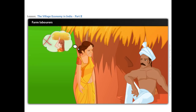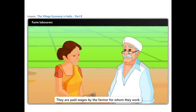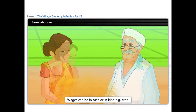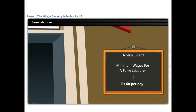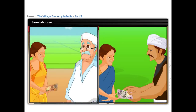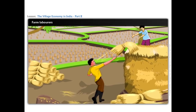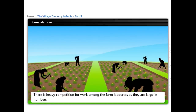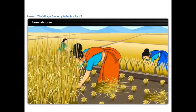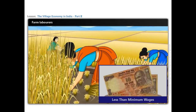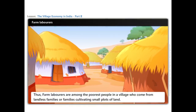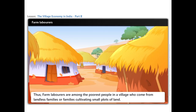Farm labourers do not have a right over the crops grown on the land. They are paid wages by the farmer for whom they work. Wages can be in cash or in kind, for example crop. Though the minimum wages for a farm labourer set by the government is Rs 60 per day, wages vary widely from region to region, from crop to crop, from one farm activity to another. There is heavy competition for work among the farm labourers as they are large in numbers. This is the reason why the wages for farm labourers in Indian villages are less than minimum wages. Thus, farm labourers are among the poorest people in a village, who come from landless families or families cultivating small plots of land.